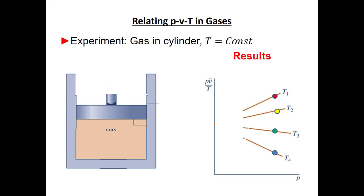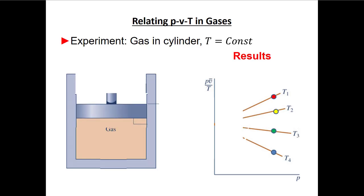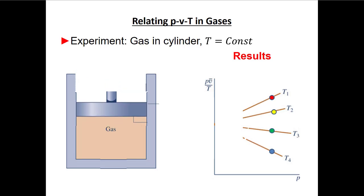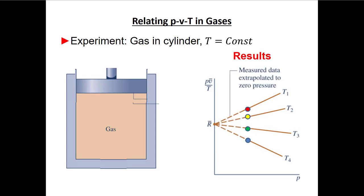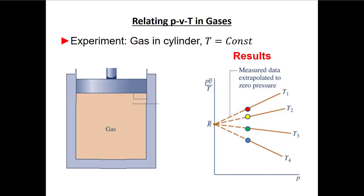As I increase the pressure at constant temperature, I move along these lines for different temperatures. If I move the piston back up I reduce the pressure and move back along the line. When people were doing this experiment, they found that if they extrapolated these lines all the way to a pressure of zero — a vacuum — all these lines would intersect the vertical axis at the same place. That value is R-bar, the universal gas constant.